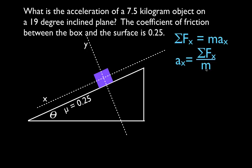The acceleration in the x direction equals the sum of the forces in the x direction divided by the mass. We know the mass, but we need to figure out which forces act in the x direction. On Earth, the first force is gravity, labeled mg — mass times 9.8 m/s². Next is the normal force, keeping the object from falling through the inclined plane. Since we have friction, we draw that in too; the object moves left, friction opposes motion, so friction acts in the opposite direction. Those are the three forces acting on this object.